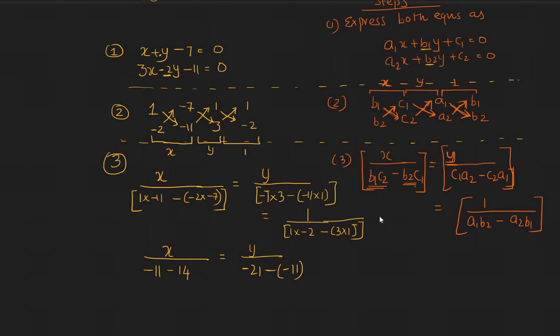That becomes minus of minus is plus. So in fact, if you want to write that, you can write that straight away here. So plus 11, that's minus of minus, plus 11. That's equal to 1 by minus 2, minus 3. Or x by minus 15, equal to y by minus 10. That's equal to 1 by minus 5.